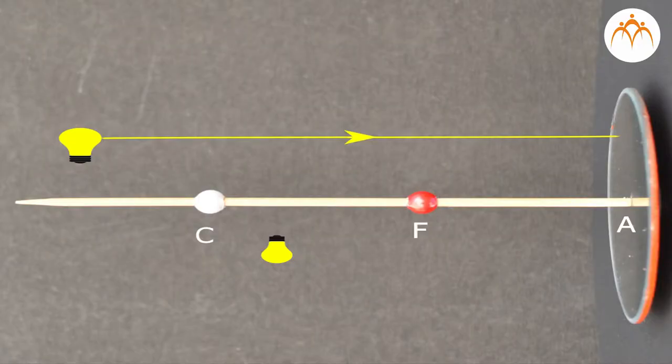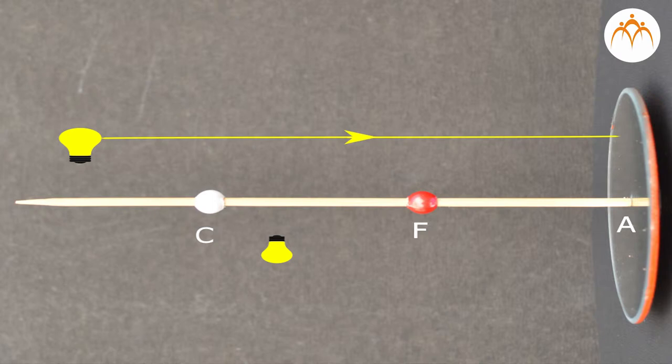Let's find out how images are formed by a concave mirror. A light bulb is placed in front of a concave mirror at a location somewhere behind the center of curvature C. The bulb will emit light in a variety of directions, some of which will strike the mirror. Each individual ray of light that strikes the mirror will reflect according to the law of reflection. Upon reflecting, the light will converge at a point, and at the point where the light from the object converges, a replica or reproduction of the actual object is created. This replica is known as the image.